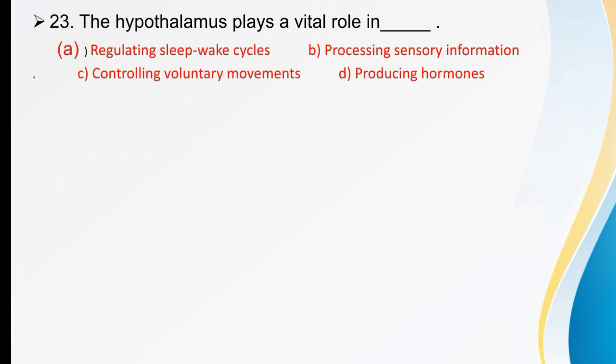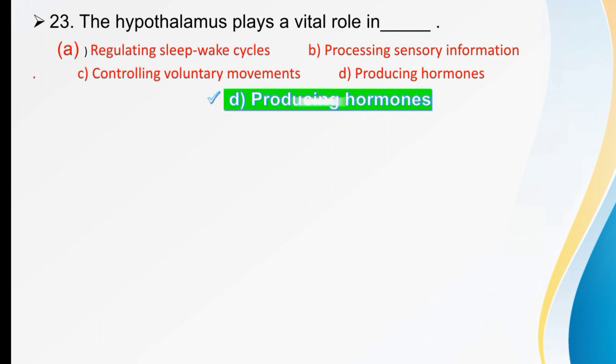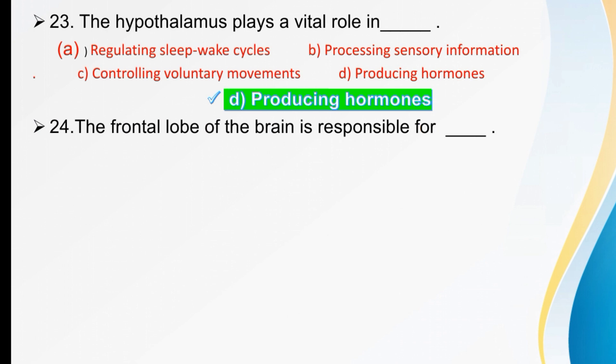The hypothalamus plays a vital role in dash. Options are regulating sleep-wake cycle, processing information, controlling voluntary movement, or producing hormones. The hypothalamus plays a vital role in producing hormones.